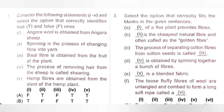Statement 2: Spinning is the process of changing fiber into yarn. True. Statement 3: Sisal fiber is obtained from the fruit of a plant. False — sisal fiber is obtained from the leaves of its plant. Statement 4: The process of removing hair from the sheep is called shearing. True.